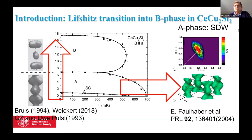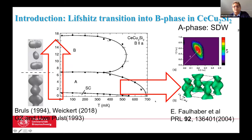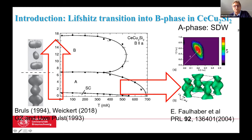Lifshitz transitions in heavy fermion materials have been observed a very long time ago. Here I show the phase diagram of Cerium copper 2 silicon 2, where we plot different phases as a function of temperature and magnetic field. Cooling down from high temperatures, one first hits a phase called phase A, which was identified as a spin density wave phase. The propagation vector can be related to nesting on the Fermi surface.